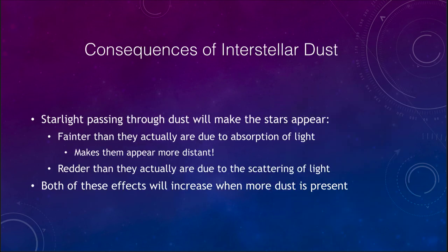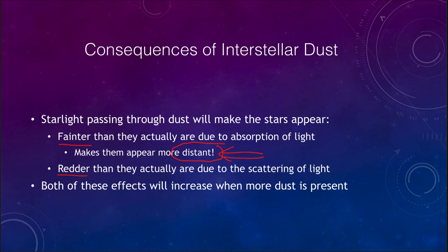So what does the dust do? It makes stars appear fainter than they otherwise would, and it makes them appear redder. When it makes them appear fainter, that throws off our distance estimates — it makes them look more distant than they are. If we don't know about the dust and do not take it into account, we will underestimate their luminosity, making us think they are farther away than they actually are. Before we understood dust, this had a significant effect on our distance measurements. The more dust that is present, the more prominent both of these effects become.